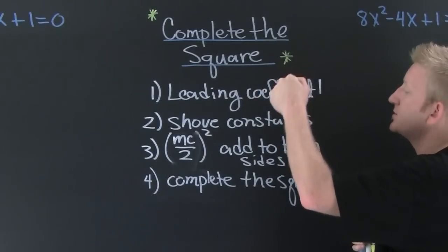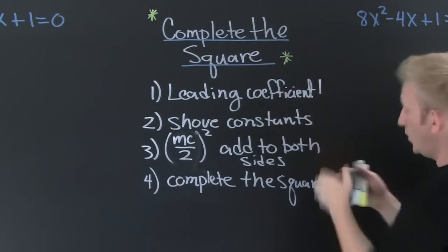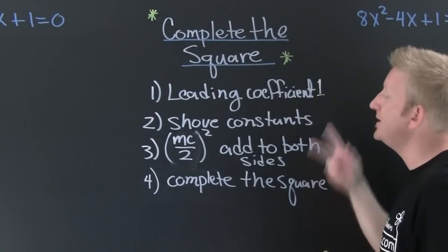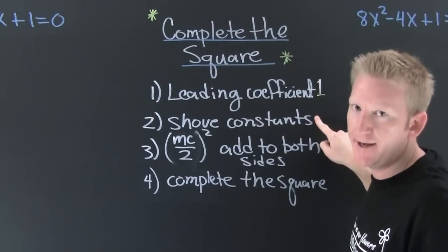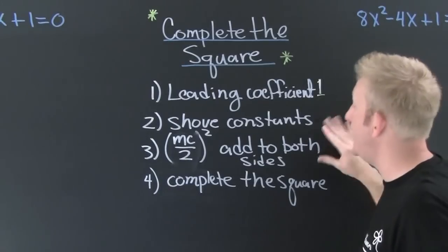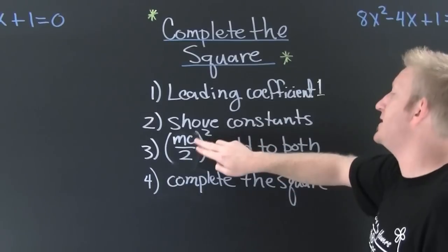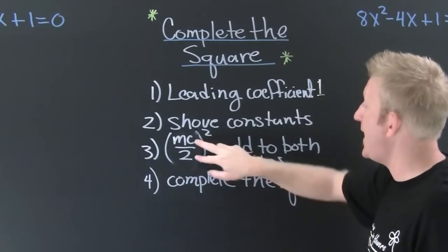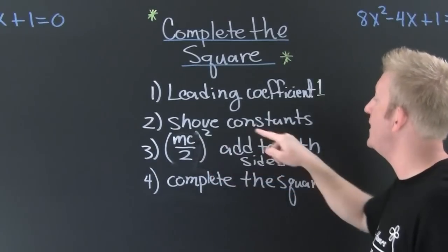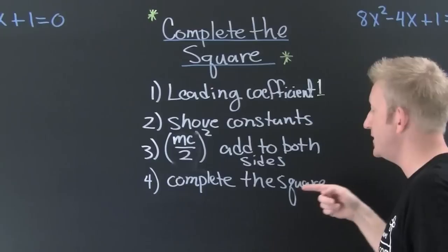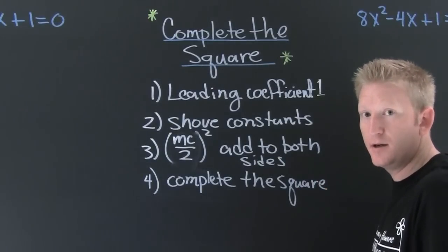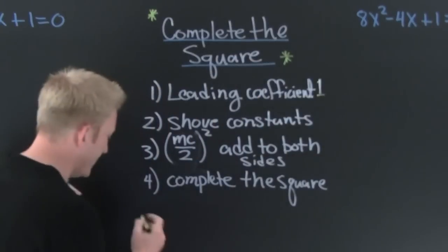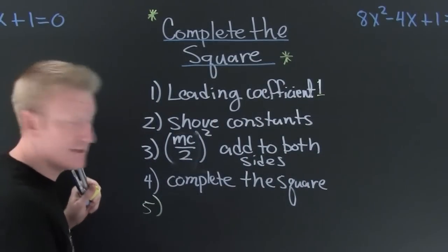All right, to complete the square we first need the leading coefficient to be 1. Next you need to shove the constant. It's slang. Then it says half the middle coefficient squared, add it to both sides. Then you want to complete that square. Oh, I forgot the fifth step. Step five, square root property and solve.